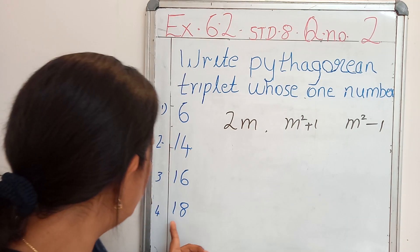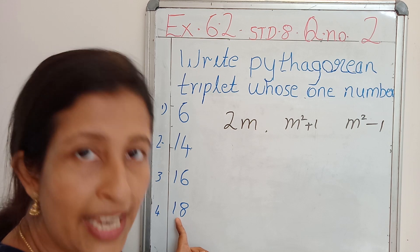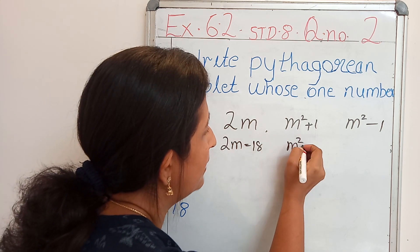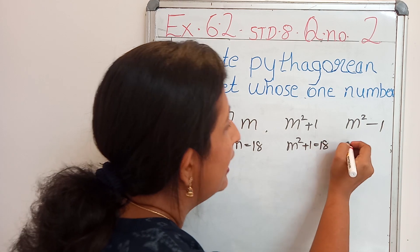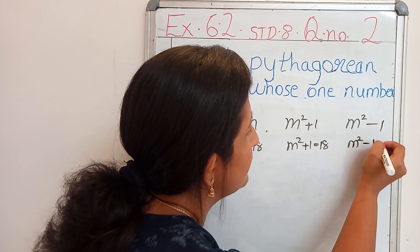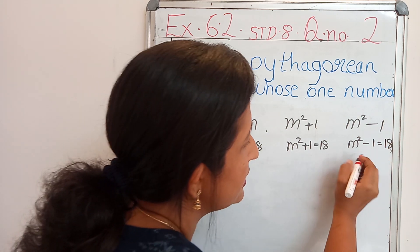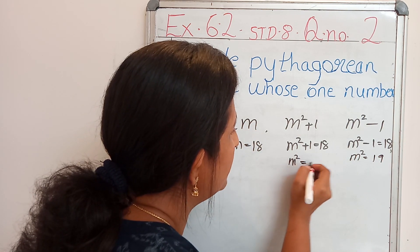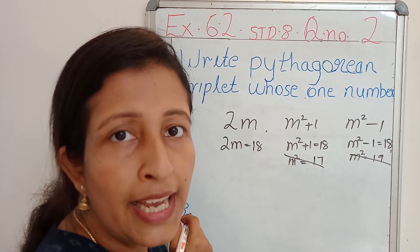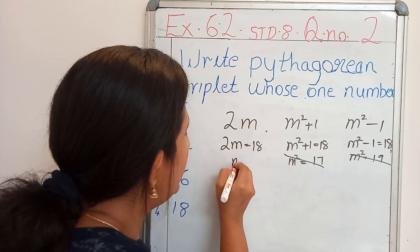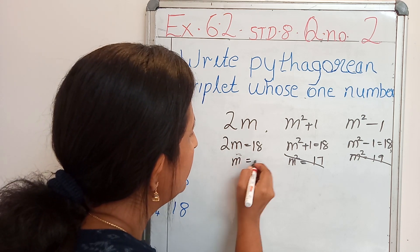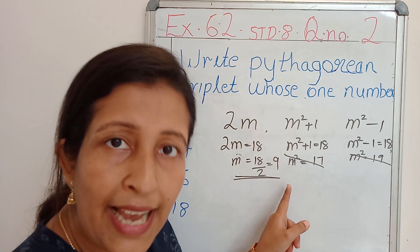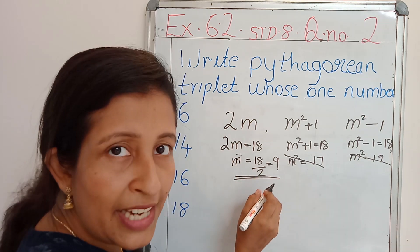Coming back to the 4th one. One Pythagorean triplet is 18. Sometimes 2m equals 18, otherwise m square plus 1 equals 18, otherwise m square minus 1 equals 18. If m square minus 1 is 18, then m square equals 19. If m square plus 1 is 18, then m square equals 17. In both cases, m won't be a natural number. And in this case, 2m: m equals 18 divided by 2 equals 9. We got the value of m and it is greater than 1 and it is a natural number.